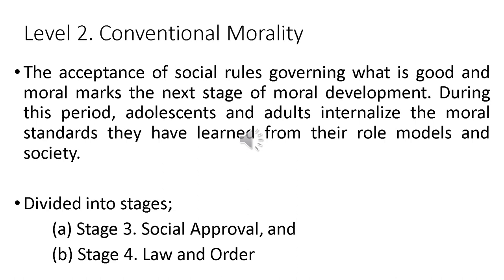Let's proceed to level 2, conventional morality. The acceptance of social rules governing what is good and moral marks the next stage of moral development. During this period, adolescents and adults internalize the moral standards they have learned from their role models and society. This period also focuses on the acceptance of authority and conforming to the norms of the group. There are two stages at this level: stage 3 is social approval and stage 4 is law and order.